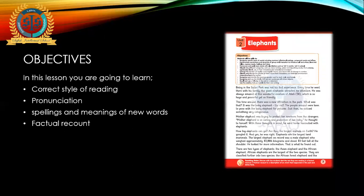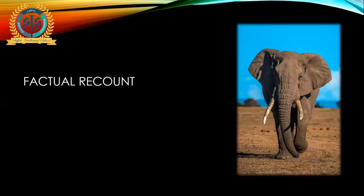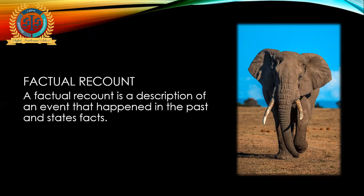As you can see in the picture, this is the page which we are going to read today, page number 7. Before the start of reading, I will tell you what is a factual recount. A factual recount is a description of an event that happened in the past and states facts. Factual means based on facts and reality, and recount means retelling the event or story. So altogether, factual recount means a retelling of a factual story.